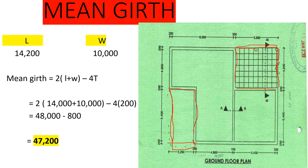Now we want to calculate the mini gut, so let's get the total length and total width. Our length will be 200 plus 8,000 plus 200 plus 5,600, which gives us 14,000. Our width will be 200 plus 5,400 plus 200 plus 4,000 plus 200, which gives us 10,000.